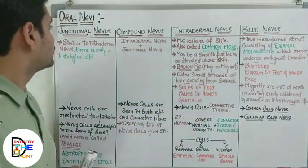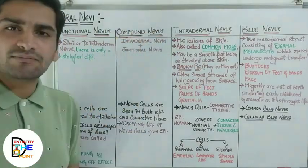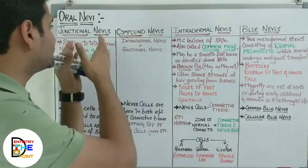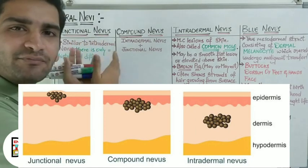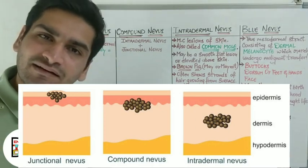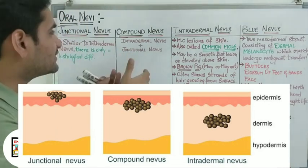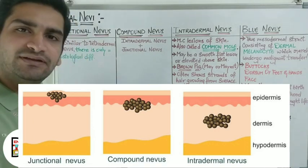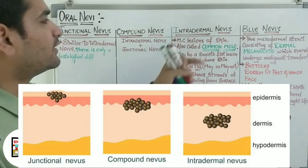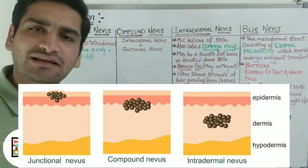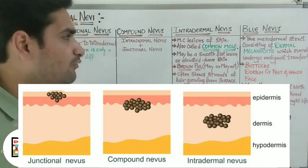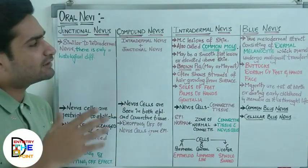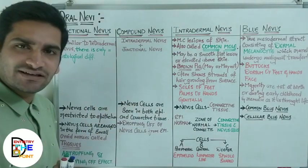The junctional, compound, and intradermal nevi are given their names based on the presence or location of nevus cells. In junctional nevus, the nevus cells are present at the junction of epithelium and connective tissue. In compound nevus, they are present in both the epithelium and connective tissue. In intradermal nevus, the nevus cells have crossed the epithelium and are only present in the connective tissue. We will now discuss the clinical and histological features of all three variants in detail.